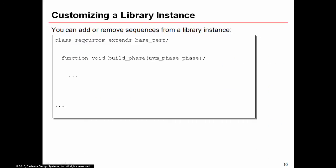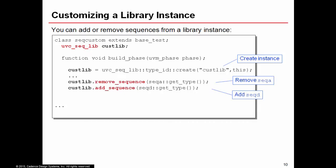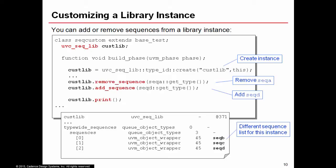You can also customize a library instance by adding or removing sequences. On the instance cust_lib, call the remove_sequence method to remove SeqA, and call add_sequence to add SeqD. When you print the library, you'll see that SeqA has been removed and SeqD has been added, giving this particular instance a different set of sequences.